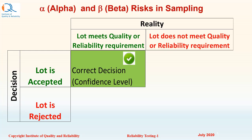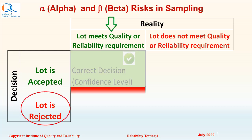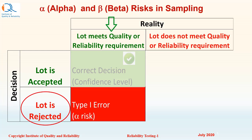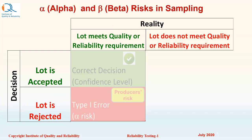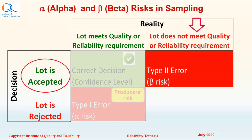If the lot meets quality or reliability requirements but we reject the lot, this would be a type 1 error or alpha risk, also called producer's risk in the context of sampling plans. Consider the other possible reality: the lot does not meet quality or reliability requirements and we accept the lot. This would be type 2 error or beta risk, also called consumer's risk in the context of sampling plans.